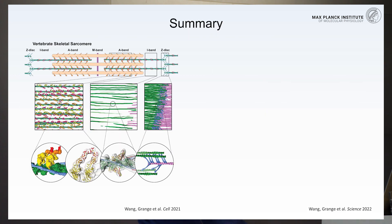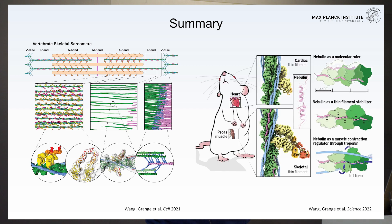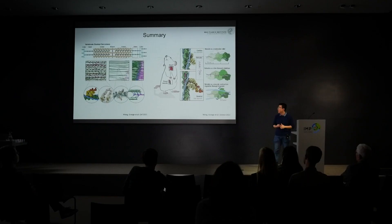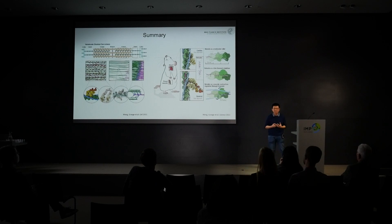To summarize, with the workflow of cryo-FIB and cryo-ET, we open a door into the interior of the sarcomere and can look at the organization of different proteins at the molecular level. We can even zoom into individual components and solve structures directly inside their native environment without the need for in vitro purification. In the future, we can expand this onto different muscle types and muscles in disease states or aged states to give insights into muscle diseases at the molecular level.